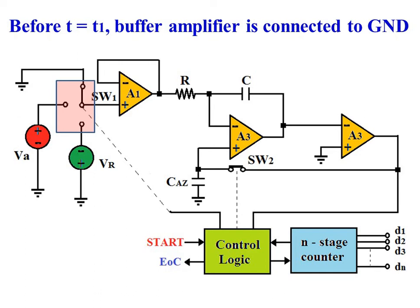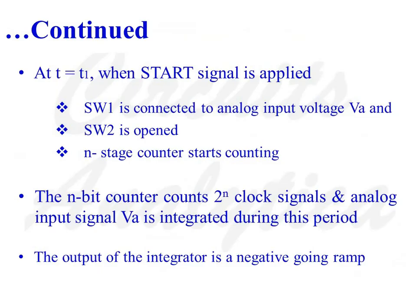When switch SW2 is opened, this voltage across the capacitance acts as a memory to nullify the offset voltage of A1 and A2. So before the application of the start pulse, that means before T equals T1, the input of the buffer amplifier is connected to ground. At T equals T1, when the start signal is applied, switch SW1 is connected to analog input voltage VA, switch SW2 is opened, and the end stage counter starts counting. The n-bit counter counts 2 raised to n clock signals and analog input signal VA is integrated during this period. The output of the integrator is a negative going ramp.